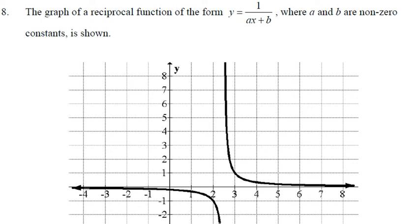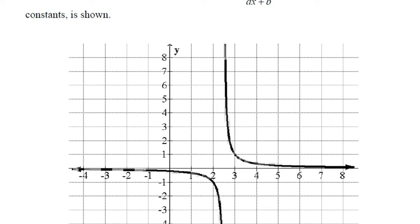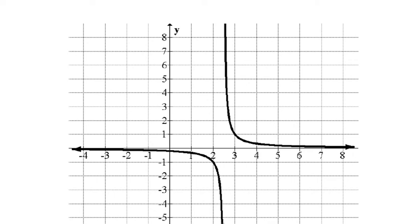Here's the graph of the reciprocal of the form y = 1/(ax + b), meaning ax + b is linear — like 3x + 2. This is its reciprocal, where a and b are non-zero constants. We need to sketch the graph of the original function. Where is the asymptote? The asymptote of the reciprocal is the zero of the original function, so there's a point. The invariant points are also on this, so they're there and there.